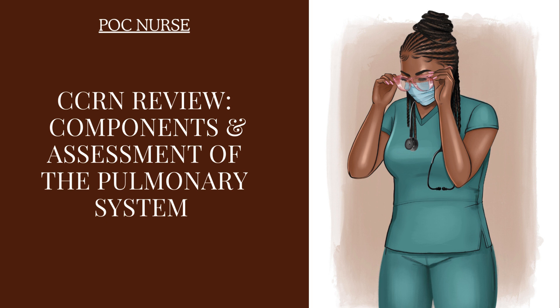We spoke about the muscles of the pulmonary system — the diaphragm, abdominal muscles, neck muscles, and intercostal muscles. If there's weakness in any of these muscles, especially the diaphragm, it's going to be difficult for respiration to occur as it should. This is where we have neuromuscular diseases of the pulmonary system. The pulmonary portion of the exam is going to be heavy on pathologic states.